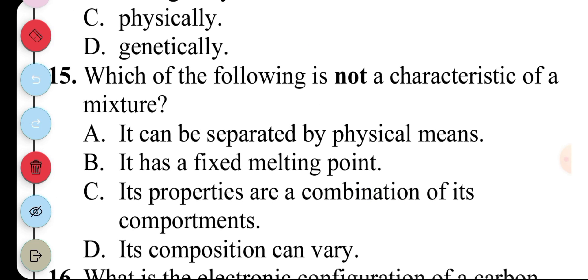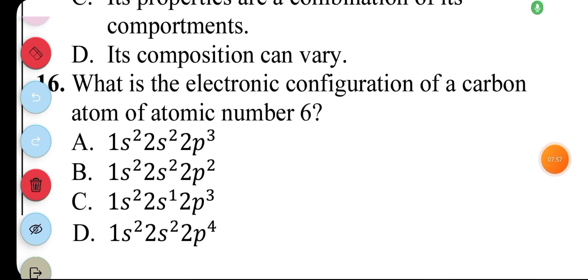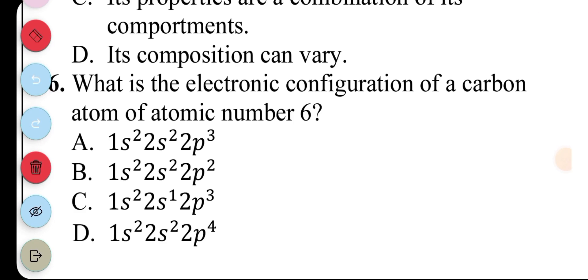Question 15. Which of the following is not a characteristic of a mixture? A. It can be separated by physical means, B. It has a fixed melting point, C. Its properties are a combination of its components, D. Its composition can vary. The answer to question 15 is B. The answer to question 16 is also B, because the exponents add up to 6.